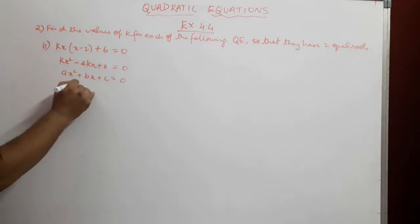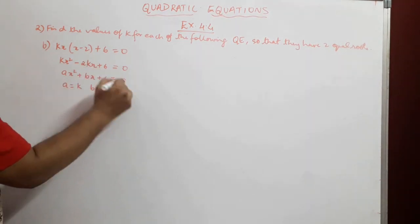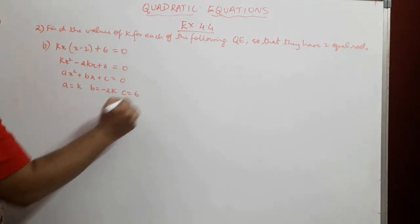Comparing we get a = k, b = -2k, and c = 6.